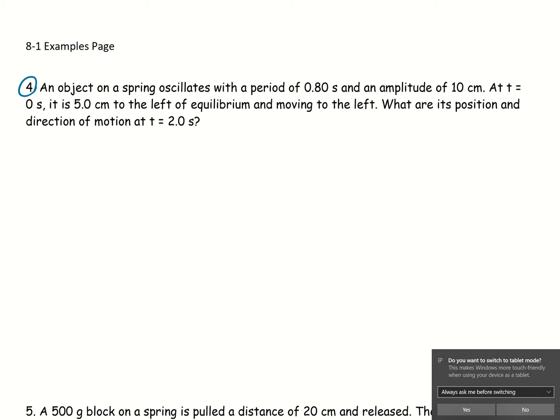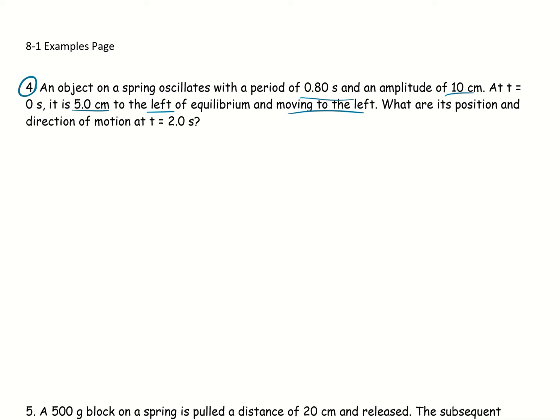So an object oscillates with a period of 0.8 seconds, an amplitude of 10 centimeters. At a time of 0 seconds, it's 5 centimeters to the left of the equilibrium and moving to the left. What are its position and direction of motion at 2 seconds? So they're asking us about the position and the direction at some later time.